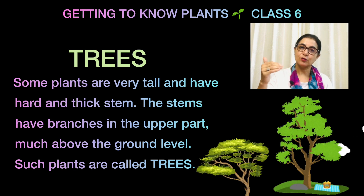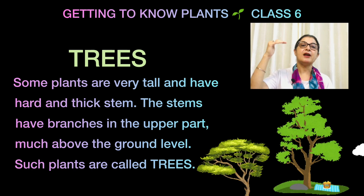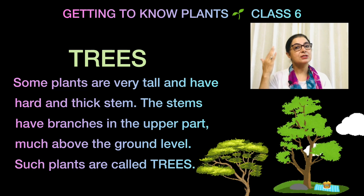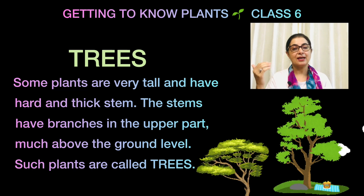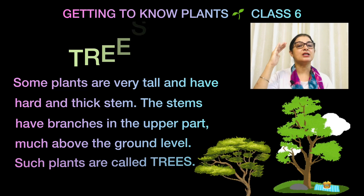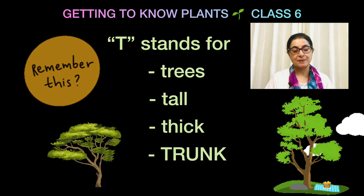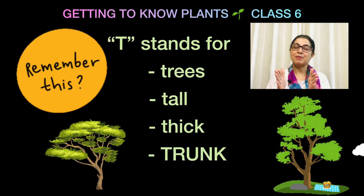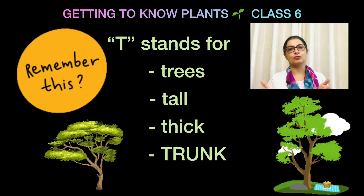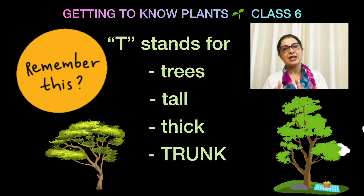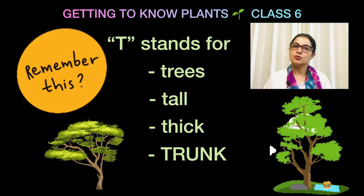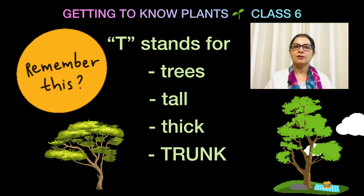Lastly, coming to trees. The first feature of trees is that they are very very tall. Because they are tall, unme bahut saari branches hain — they have many branches, and those branches are pretty high up. Their stem is the thickest when we compare it to herbs and shrubs, and it is also known as the trunk.